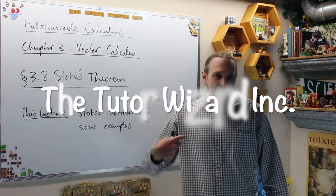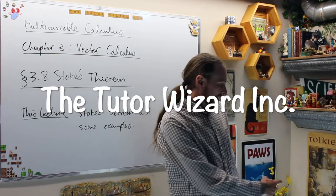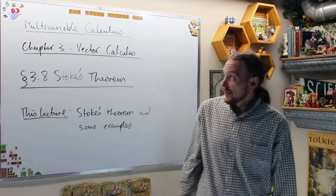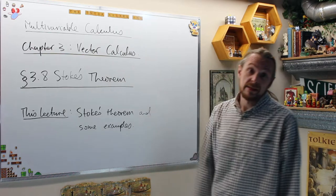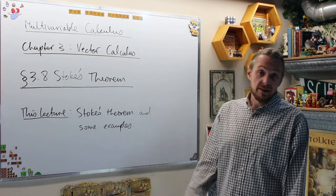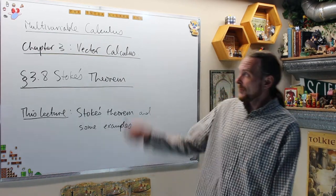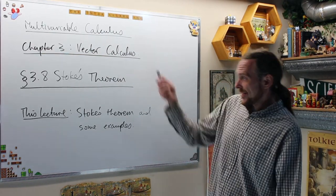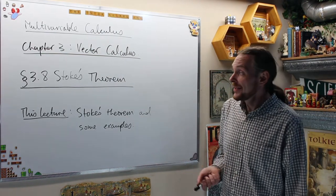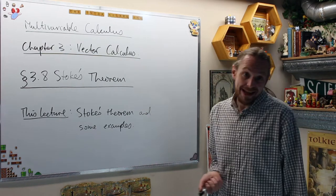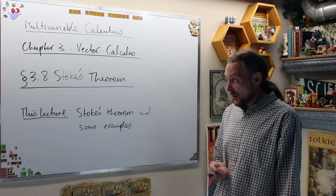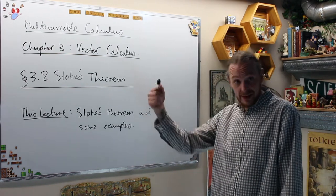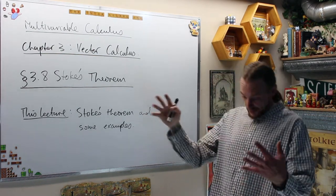Welcome back. This is the Tudor Wizard. I'm Adrian. Please subscribe right here and hit the notification bell below — you'll get notifications for this series and a bunch of others on our channel. We're doing multivariable calculus, chapter 3. Section 3.8 specifically is Stokes Theorem. We're on the homestretch: Stokes Theorem and Divergence Theorem, then we're done.